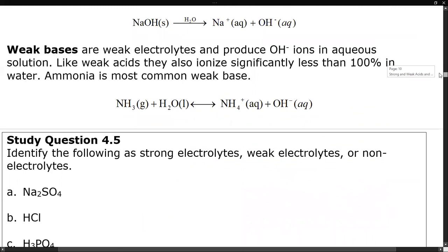Weak bases are weak electrolytes that produce hydroxide ions in aqueous solution, but again usually with less than 10% ionization. Ammonia is a common example — ammonia plus water yields ammonium ion and hydroxide ion. Sparingly soluble bases that aren't very soluble do ionize a little, so you get a small amount of OH− in solution, making them modestly basic.